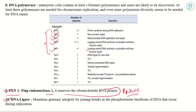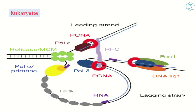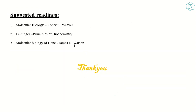Lastly, DNA ligase, as in prokaryotes, fixes all the nicks formed during the replication process. This is the pictorial representation of eukaryotic DNA replication, where all the different enzymes are shown — RPA, PCNA, polymerase delta, polymerase epsilon, FEN-1, and DNA ligase. For further reading, some books are suggested. Thank you for watching and stay tuned for upcoming videos.